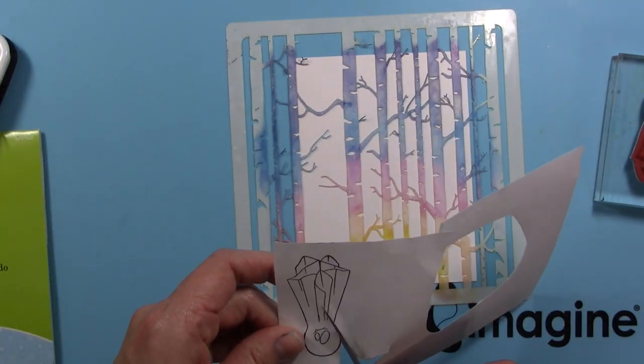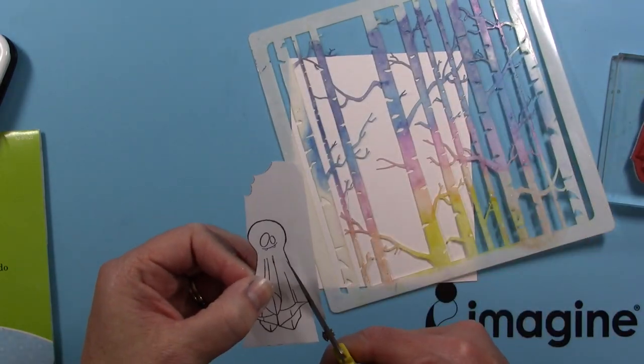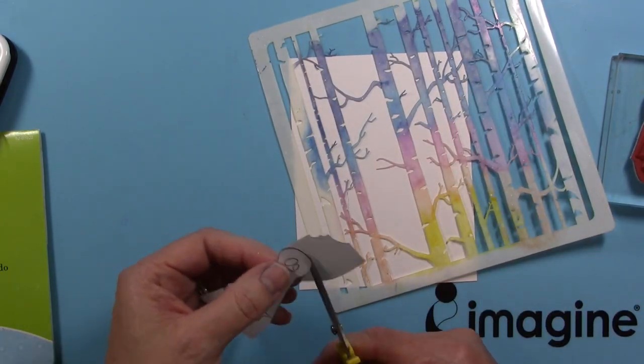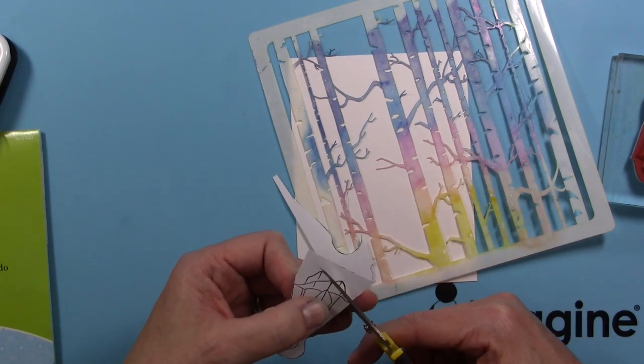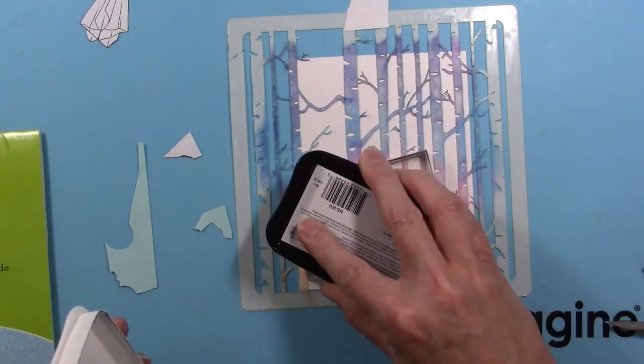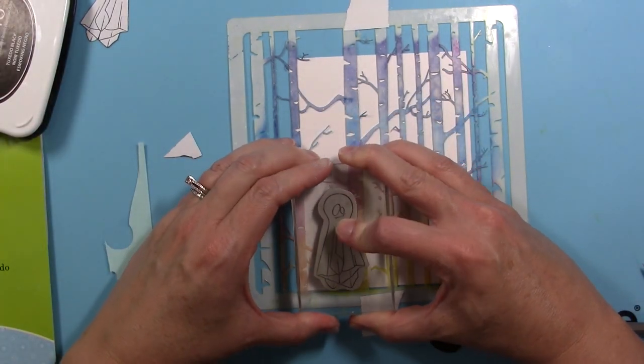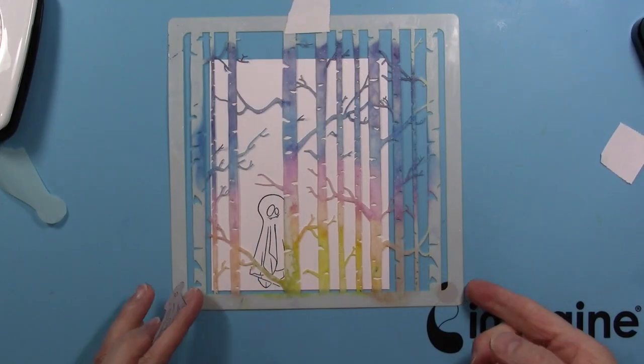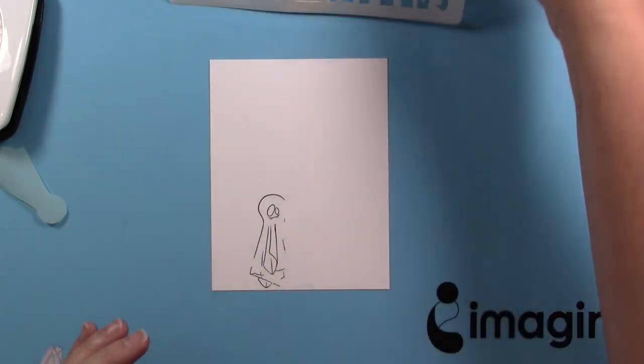I'm starting by stamping this cute little ghost that I got from Sew Suzie and I'm going to just fussy cut that out and set that mask to the side. I had to think about how I was going to put this card together and have the trees the color that I wanted, and I wanted this little ghost kind of sneaking out from the side of the tree.